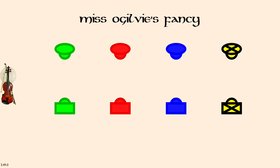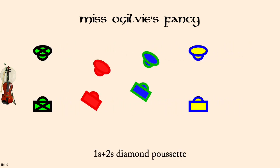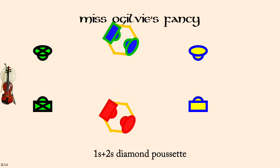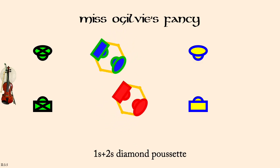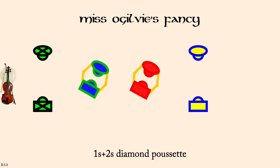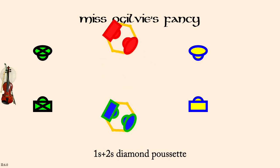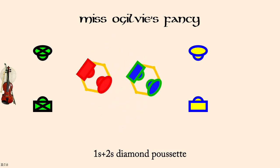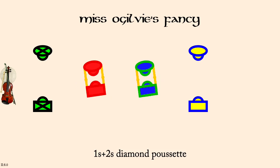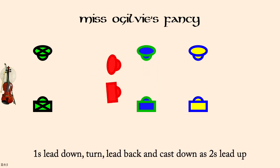Ones and Twos, Diamond Pousset. Ones lead down, turn, lead back, and cast down as twos lead up.